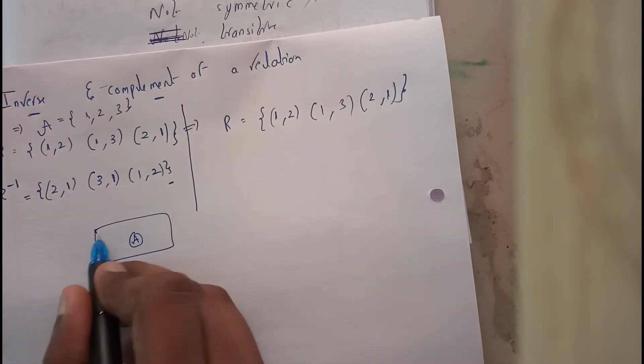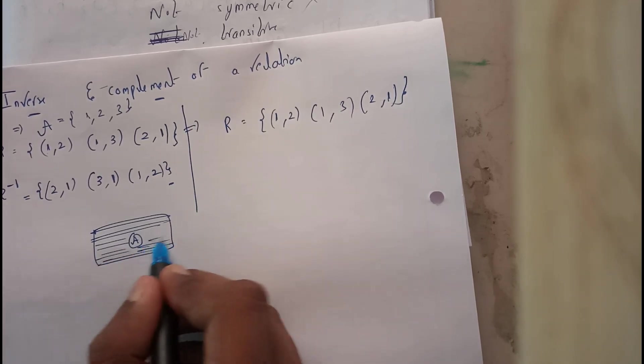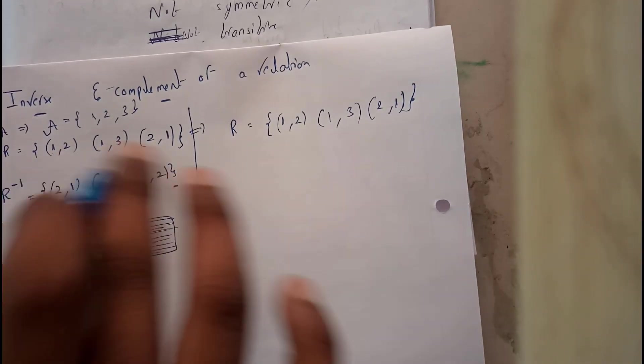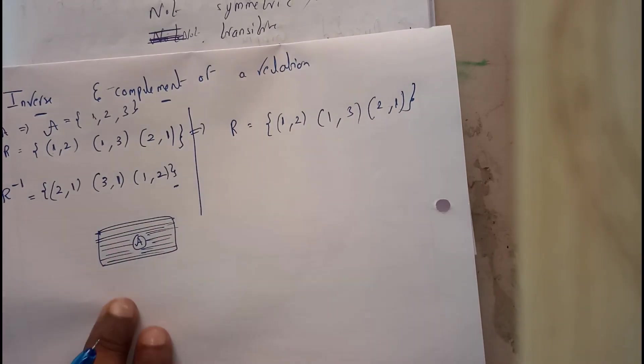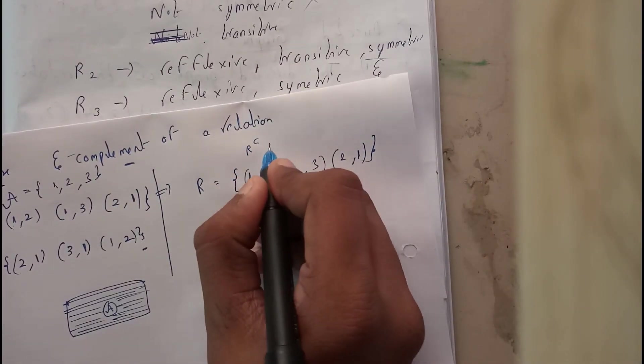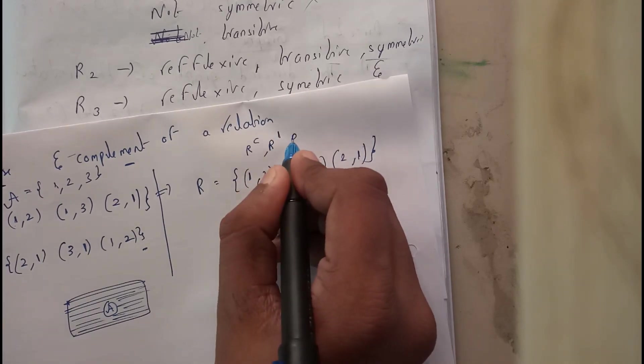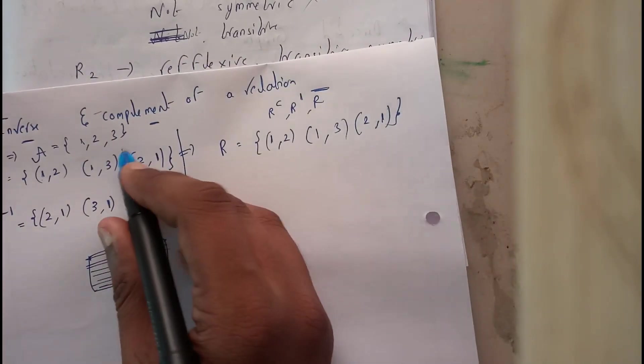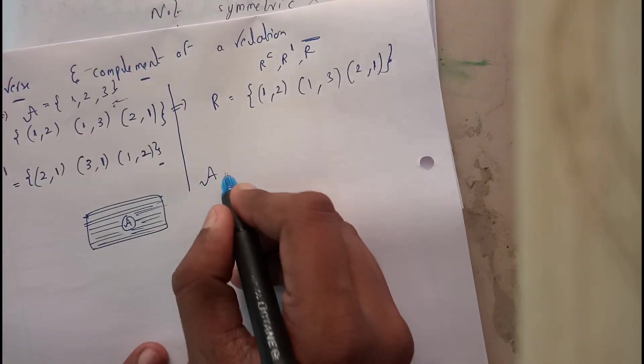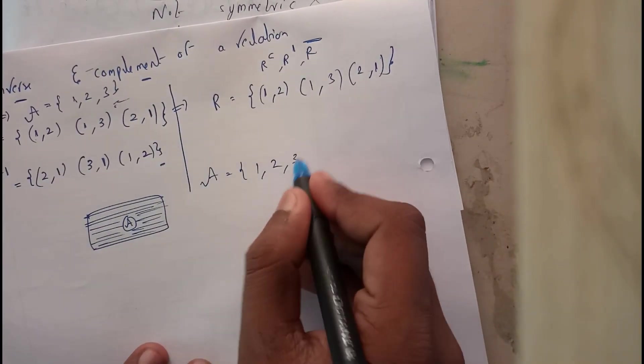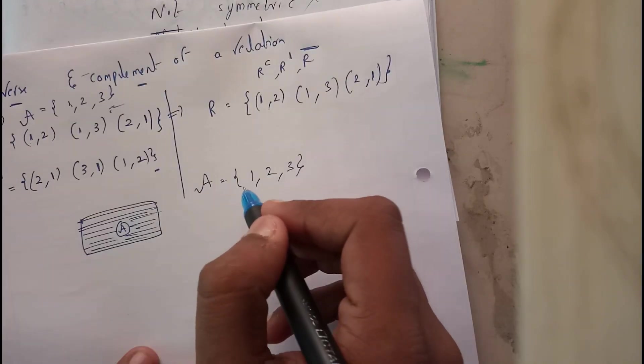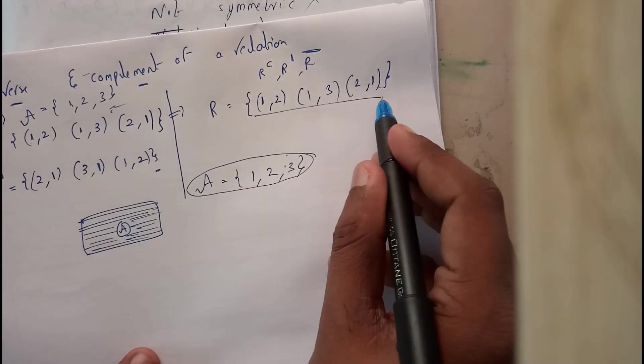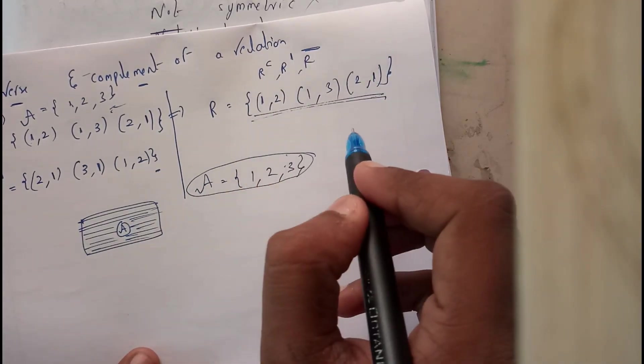Let us assume A is given. The complement of A is the rest of the elements other than A. The left out is the complement of A. It is denoted by R power c or R bar. Here similarly, A equals {1, 2, 3}, so we need to find all the combinations and subtract these values.